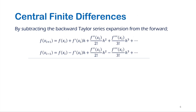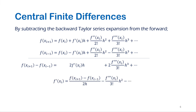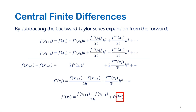The derivation of the central differences is much easier since it can be considered a combination of both the forward and backward differences. Accordingly, it can be found by subtracting the Taylor series of the backward differences from the forward differences, which yields this infinite series. After solving the equation for f prime x_i, we notice that the largest term after the difference is the third derivative term multiplied by h squared. Because h in numerical applications is always taken as less than one, such as 0.5, 0.1, or 0.001, the order of h squared indicates a much smaller error than the other two difference types.